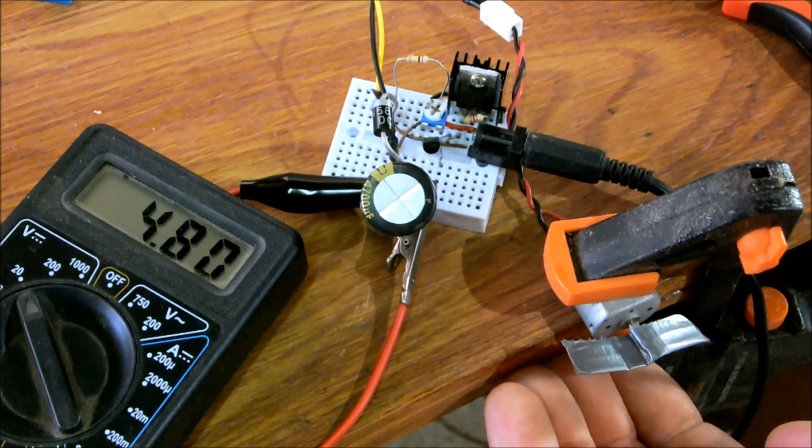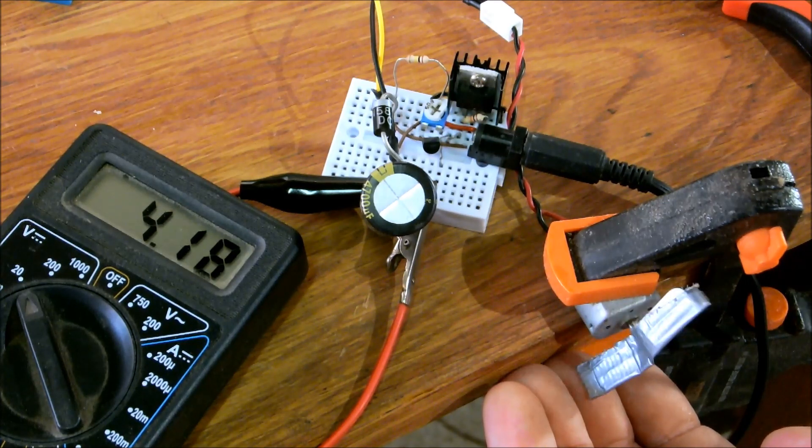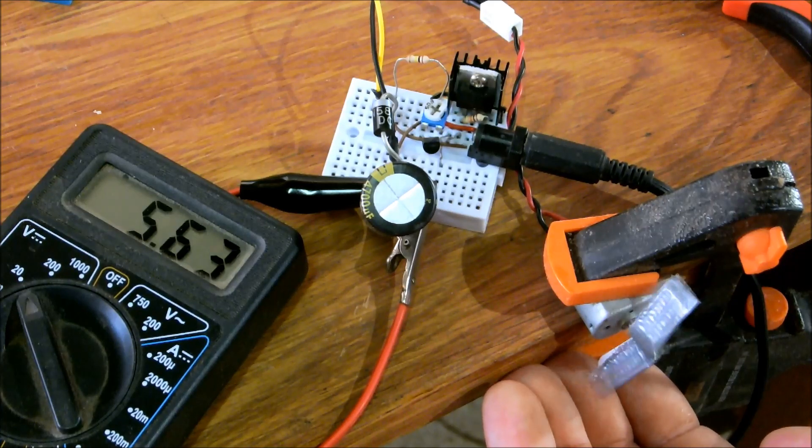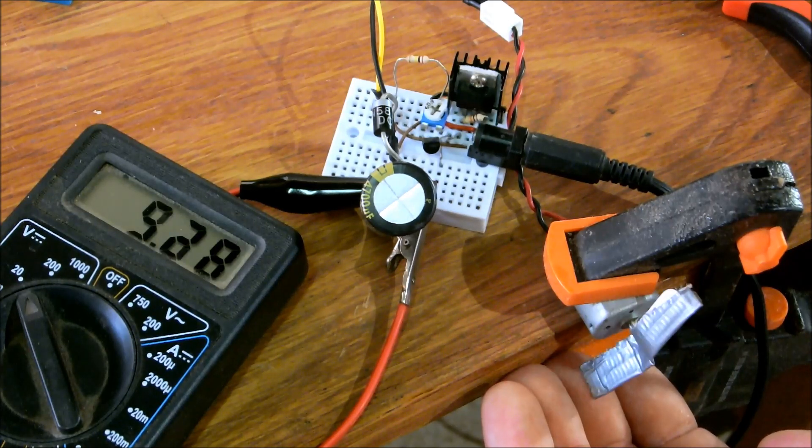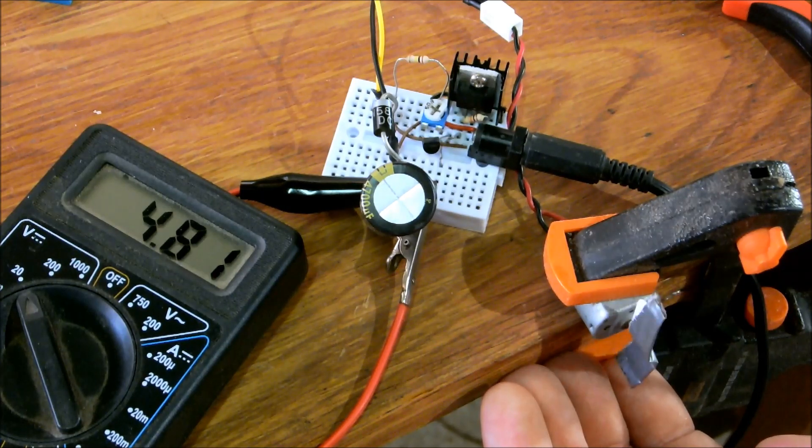The circuit essentially switches the load on and off. During the off cycle the capacitor charges up and maintains a very constant voltage on the panel very close to its maximum power point.